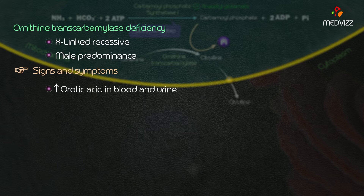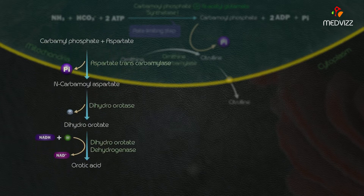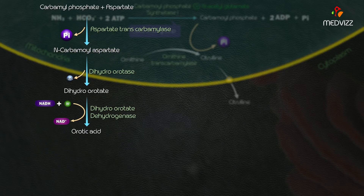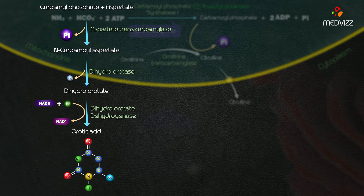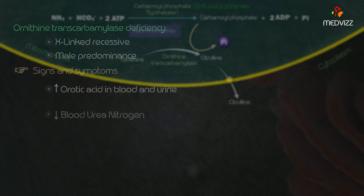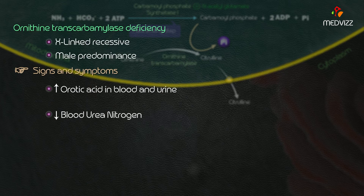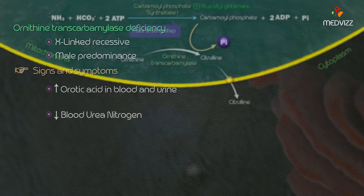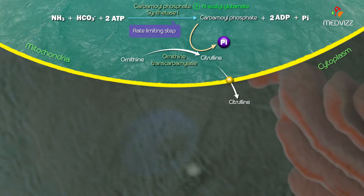There will be an increase in orotic acid in the blood as well as urine, because excess carbamoyl phosphate is converted into orotic acid, a pyrimidine synthesis intermediate. There is also decreased blood urea nitrogen and no urea produced due to the enzyme deficiency.